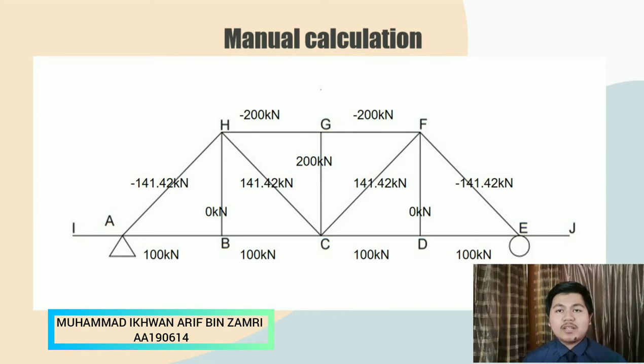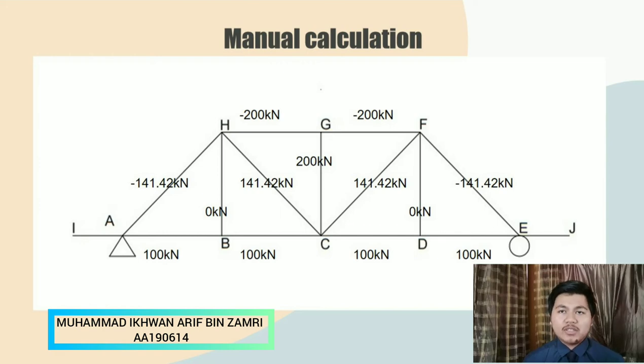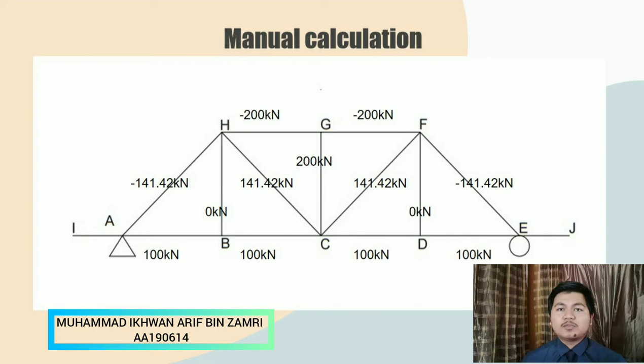To determine the point load, we need to multiply 20 kilonewton per meter with 10 meter to get the point load which is 200 kilonewton.